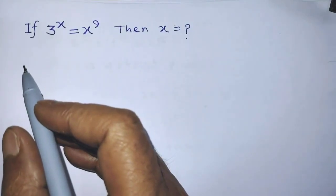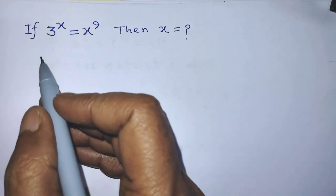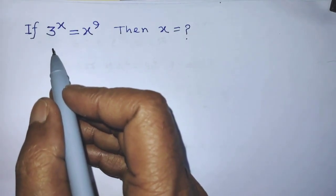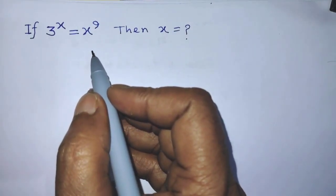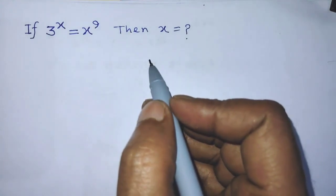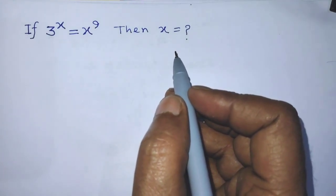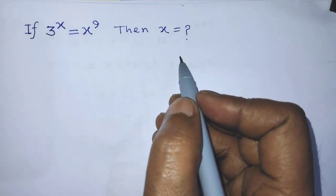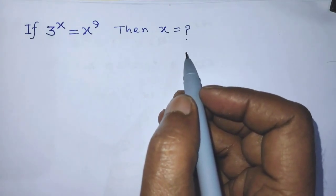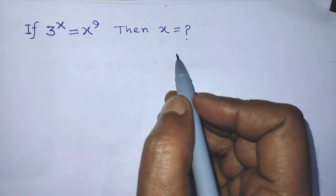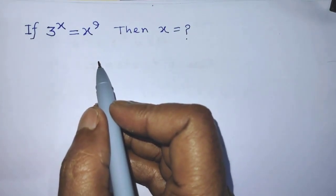Hello guys, you are welcome to solve this math problem: if 3 to the power x is equal to x to the power 9, then find the value of x. Today in this video I am telling you how to find the value of x from this exponential equation.